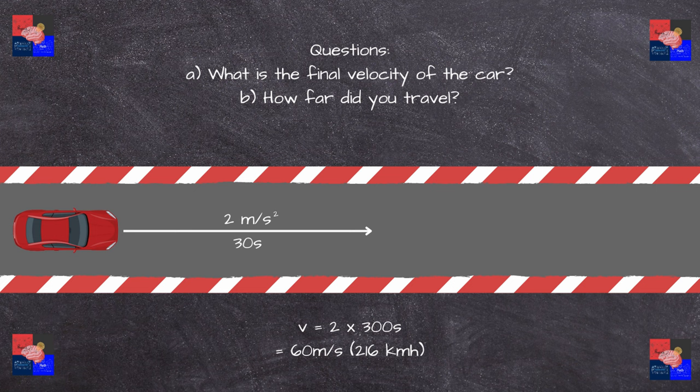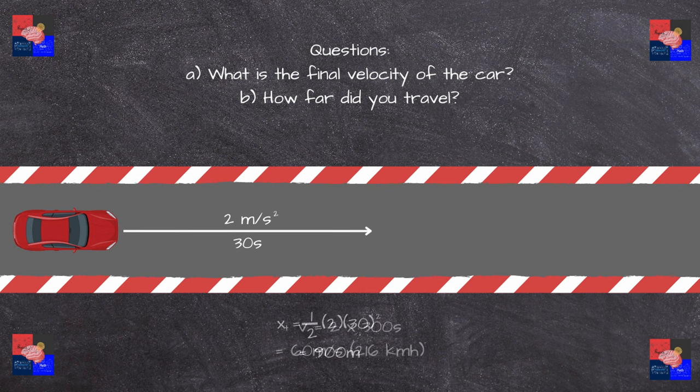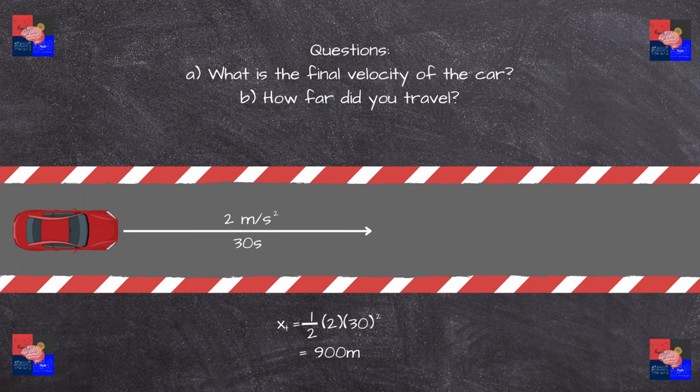As for the second one, we can disregard the first two terms because they add up to zero. So position with respect to time is one half of acceleration times time squared, which gives us a total of 900 meters. So that was a very easy example.